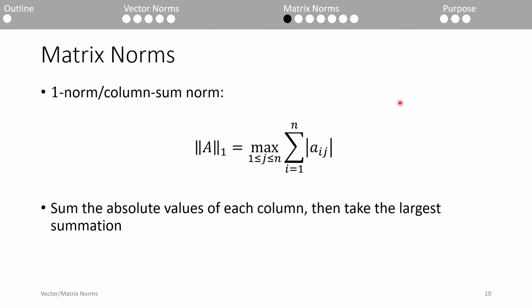We scan down each column of the matrix and sum the magnitudes of each entry. Then, we take the largest sum across the columns. This is why it's also referred to as the column-sum norm.